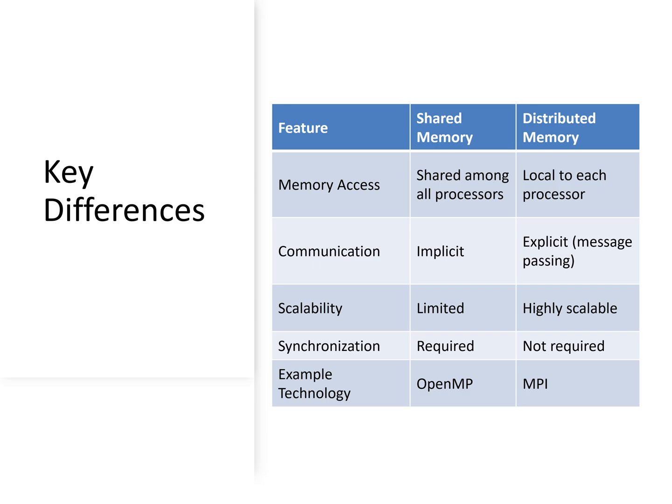Regarding communication, shared memory has implicit communication, meaning processors automatically have access to each other's data and do not need to send messages to communicate. Distributed memory has explicit communication through message passing, where processors need to send messages to each other to share data.